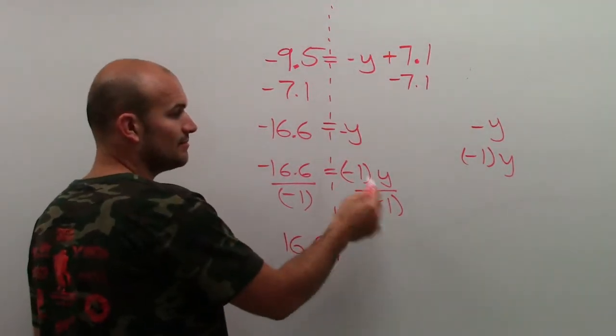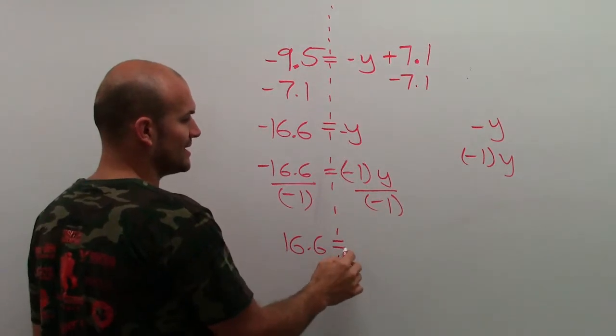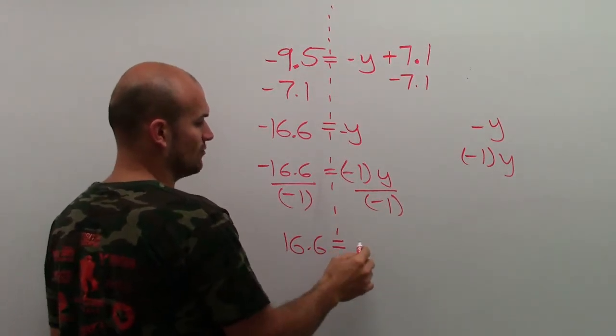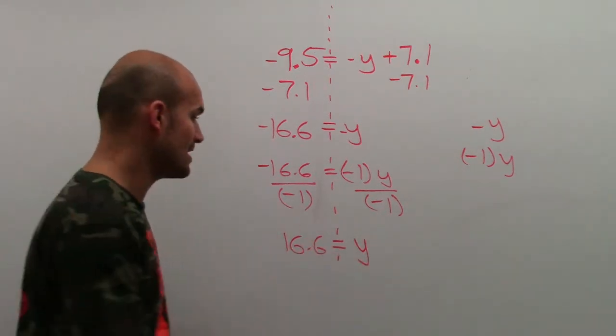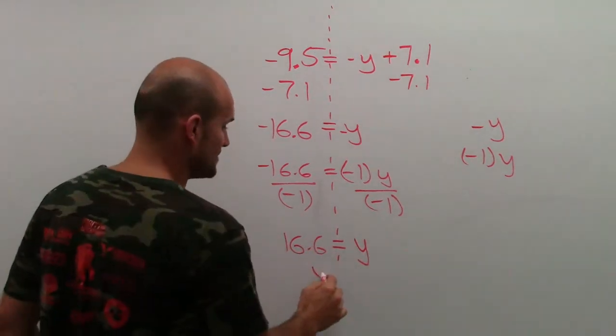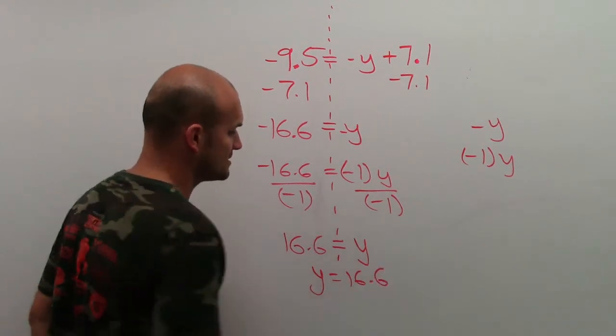And then over here, I'm just going to cancel out my negative, so I'll have 16.6 equals just a positive y. Then I'll just flip this around by using my reflexive property to say y equals 16.6.